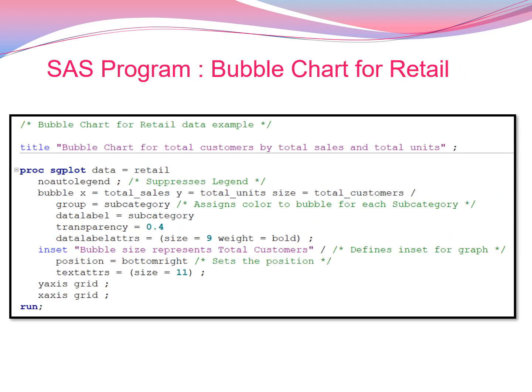Now here is the exact example for generating the bubble chart for retail. The title is 'Bubble Chart for Total Customers by Total Sales and Total Units.' I'll be using PROC SGPLOT with data equal to retail, which is the dataset name containing the data shown in the earlier slide.